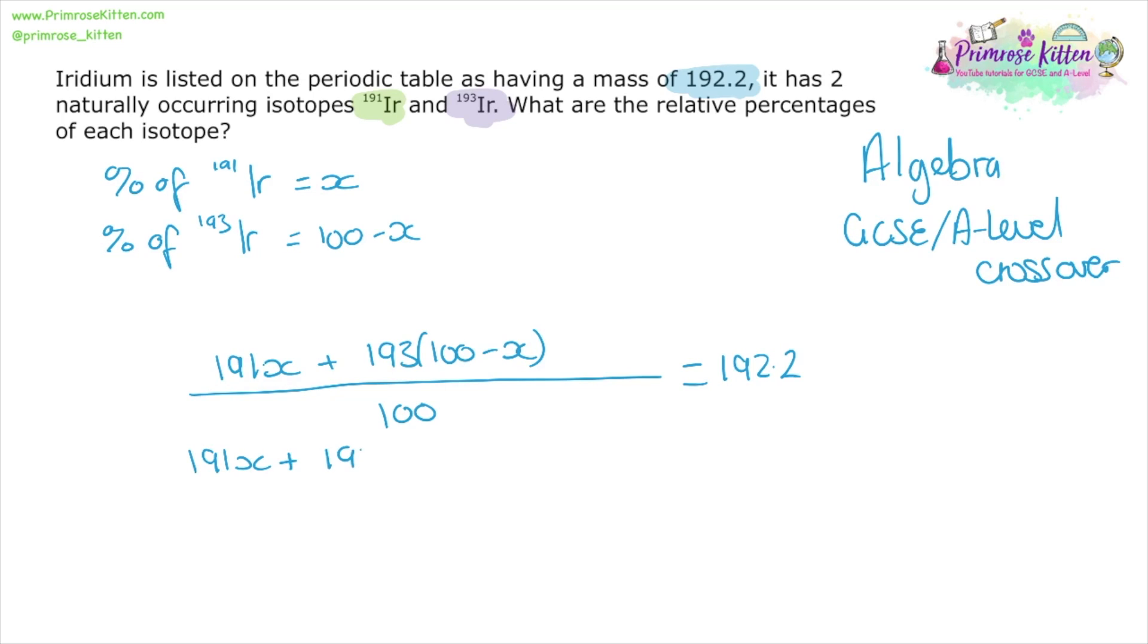We can now use algebra to tidy this up. So 193 times 100 gives us 19,300 minus 193X over 100 equals 192.2.